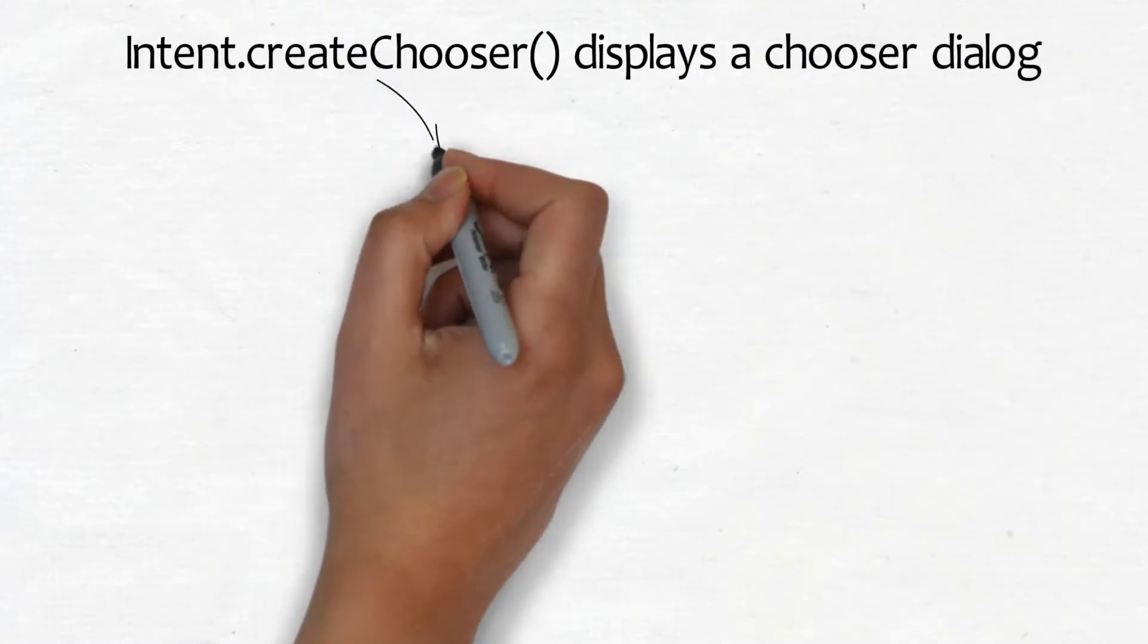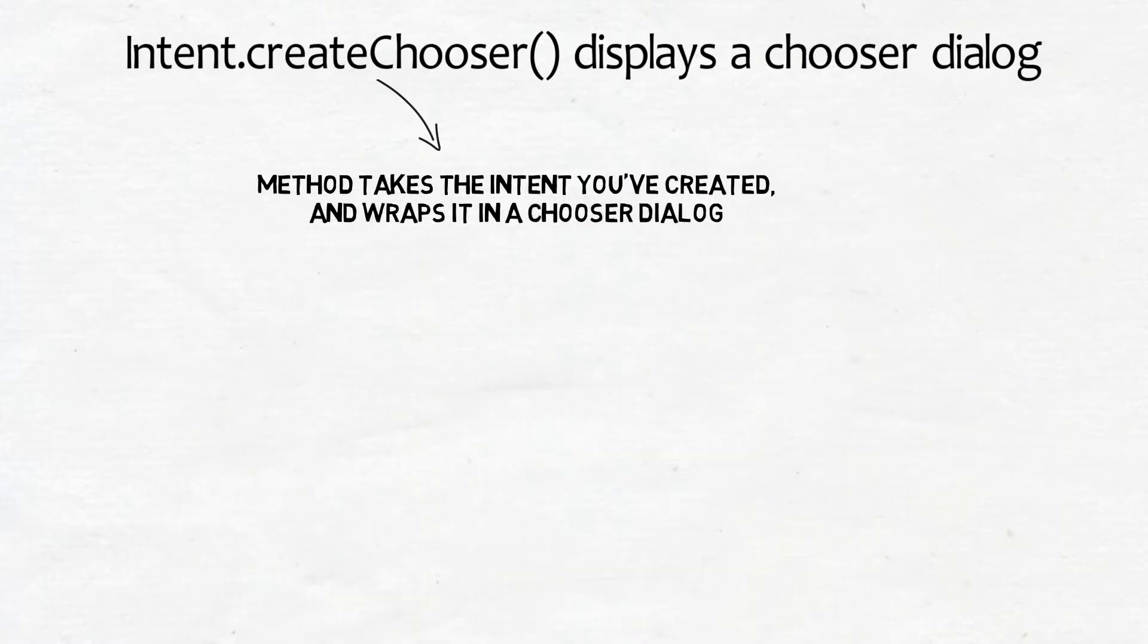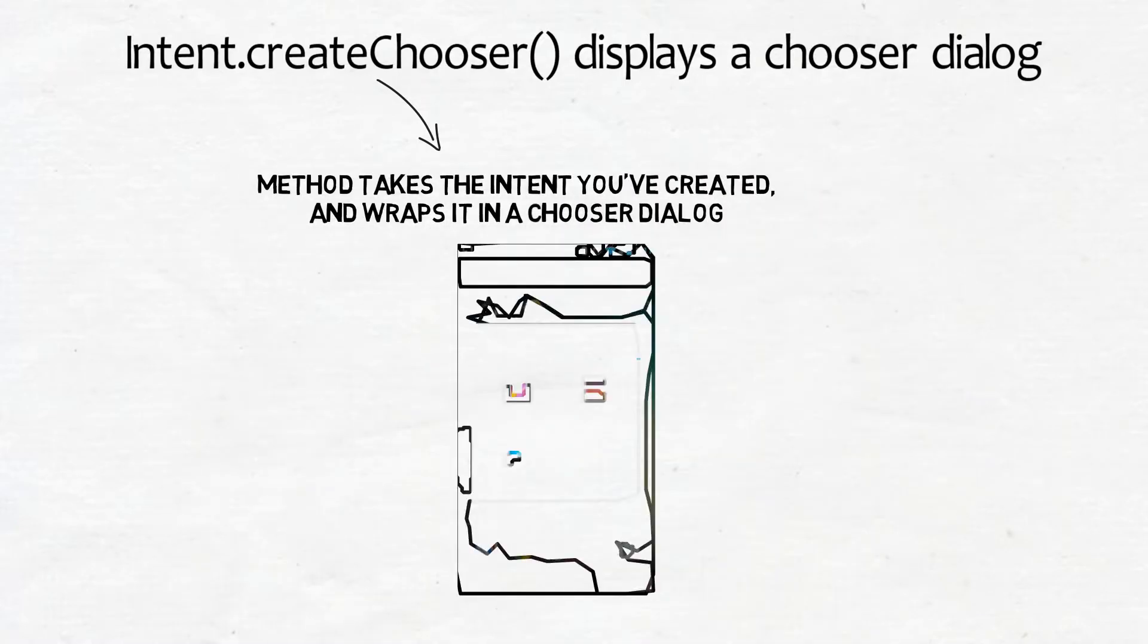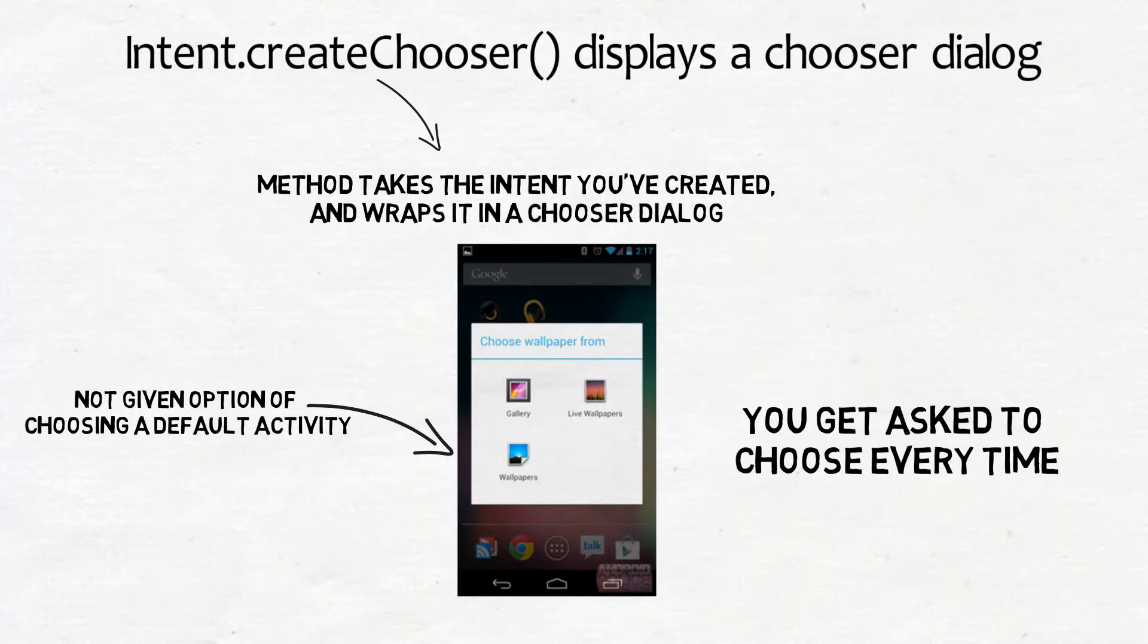Intent.createChooser displays a chooser dialog. You can achieve this using the Intent.createChooser method. This method takes the intent you have already created and wraps it in the chooser dialog. The big difference in using this method is that you are not given the option of choosing a default activity. You get asked to choose one every time.